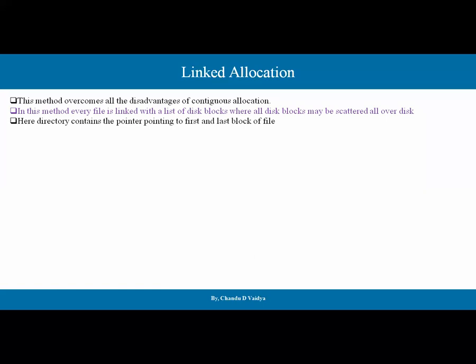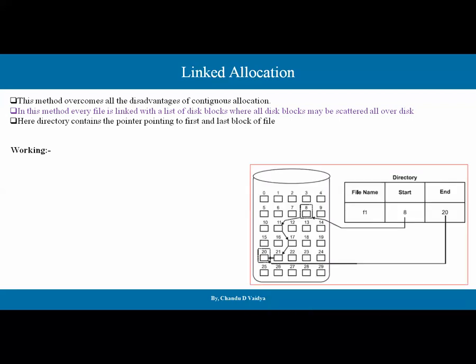The directory directly contains a pointer pointing to the first and last block of the file. This means the file allocation table, which is the directory, stores the starting and ending block entry. The directory contains: the file name, the starting position, and the ending position. So three things are required — file name, starting, and ending. Size is not required here.